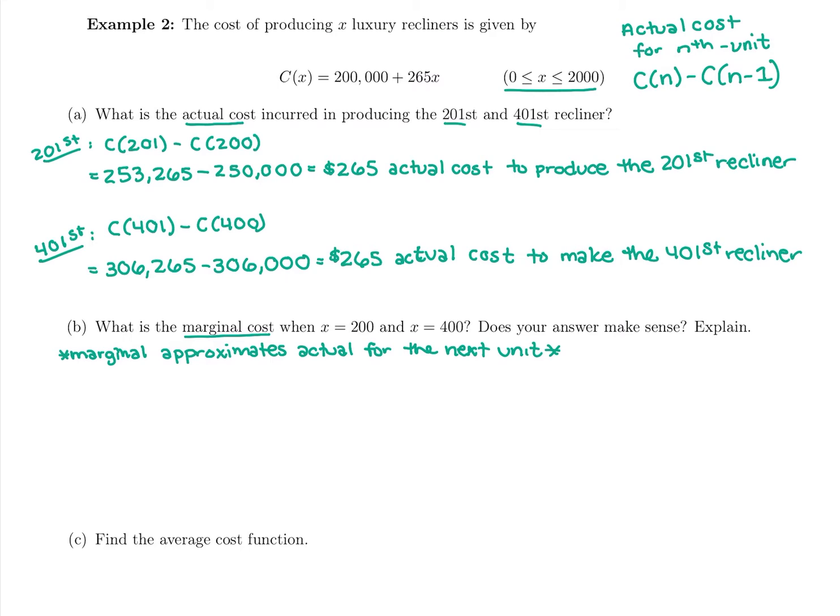So marginal cost is going to approximate the actual cost for the next unit. First of all we need to find marginal cost. Marginal means take the derivative, so I'm going to take C'(x), and that's going to be marginal cost. The derivative of $200,000 is 0, it's a constant. Derivative of $265x is $265. So our derivative is $265, always kind of a different case here.